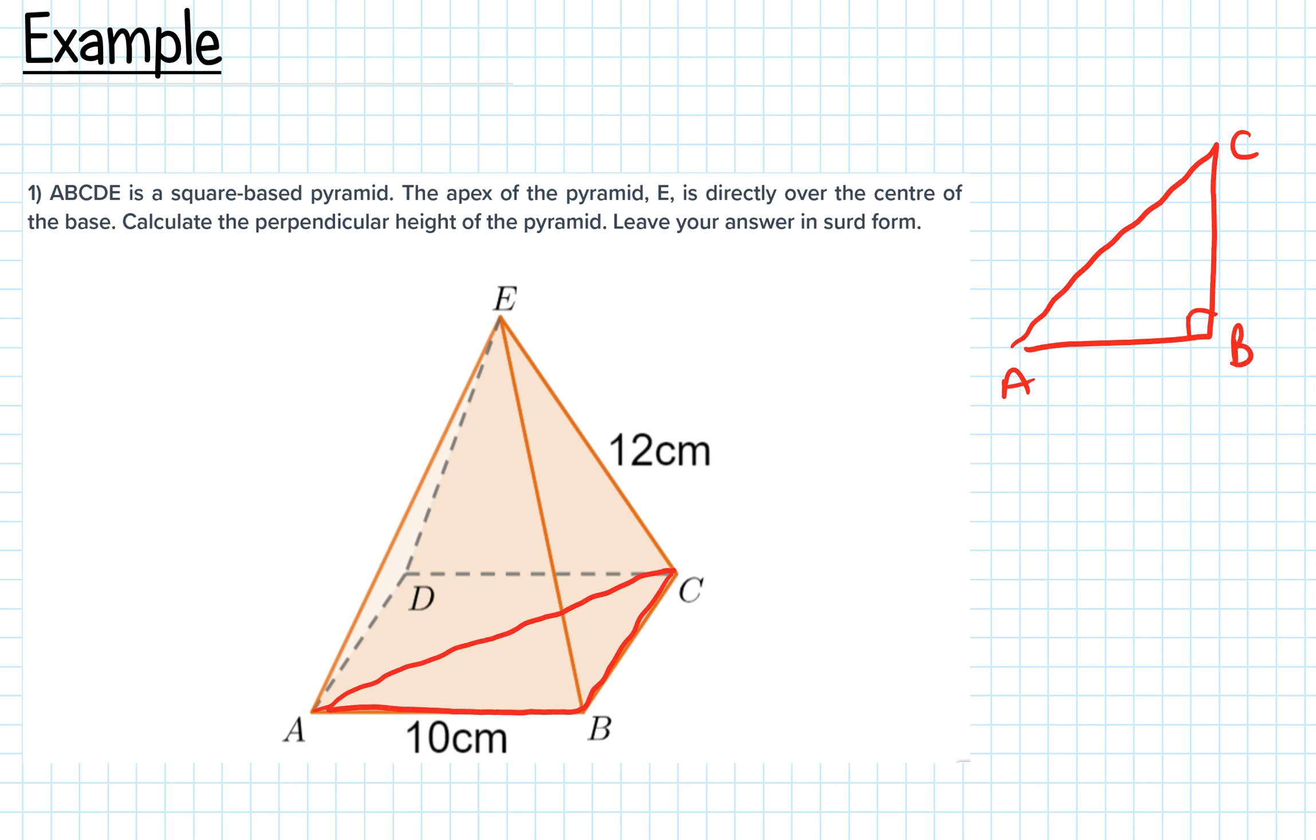It's a right angle - the question told you it's a square-based pyramid, so each of these sides is 10. I'm going to call this length AC as x, so x² equals 10² plus 10².